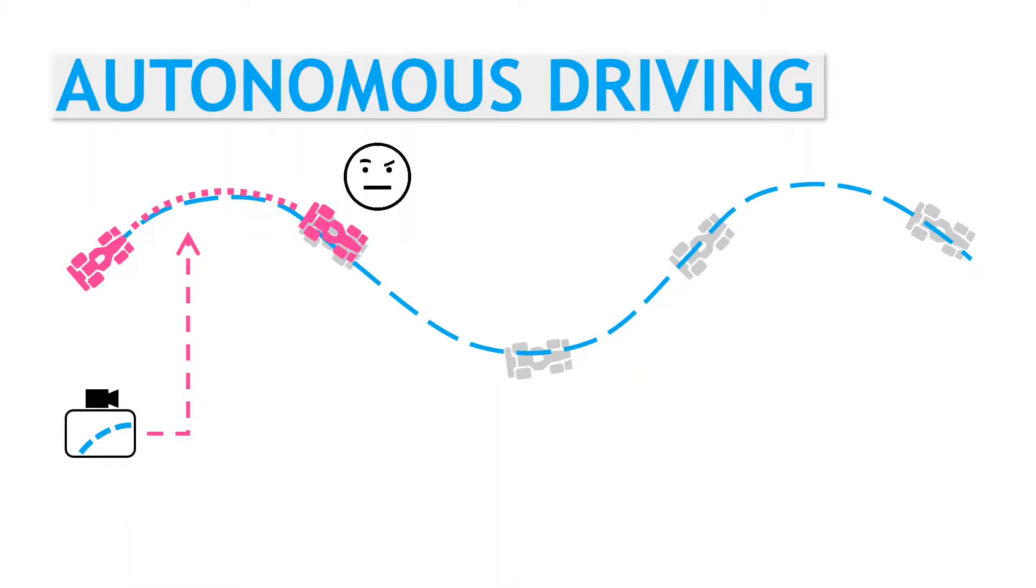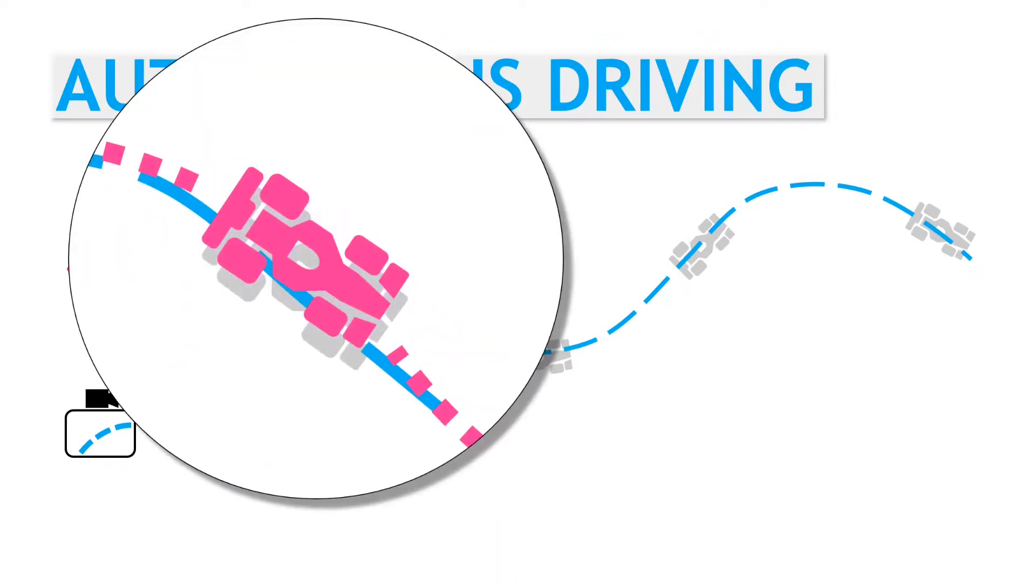And that's where the problems start. Our predicted set of steering commands are a good estimate of what the expert did. But they're not perfect. There is some small error. The result is that after applying the predicted steering commands, the autonomous vehicle ends up in a slightly different position than the expert. Very close, but slightly different.